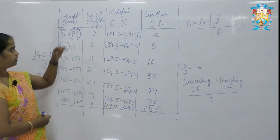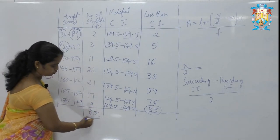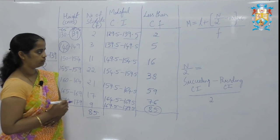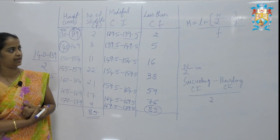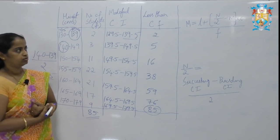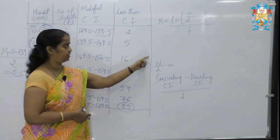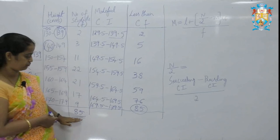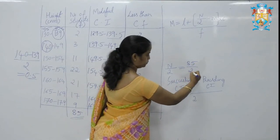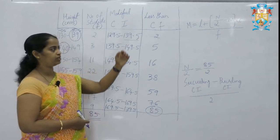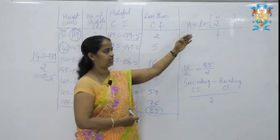85 should tally with the total frequency — here also you get 85, which tallies. Now apply the median formula: M = L + (N/2 − m) × C / f. We need N/2. N is the total frequency, which is 85. So 85 / 2 = 42.5.